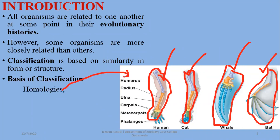The basic structure of the forelimb is the same — humans use it for grasping, cats for running, whales for swimming, and bats for flying. The basic structure is the same but the functions vary. Such structures are known as homologous structures.